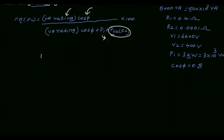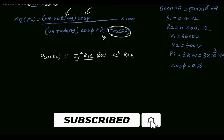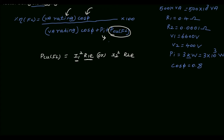First we have to find out the full load copper loss in order to find the efficiency. The full load copper loss can be found using either I1² R1E or I2² R2E, where I1 is the primary full load current and R1E is the equivalent resistance referred to the primary side, and I2 is the secondary full load current with R2E referred to the secondary side. We will use the formula I1² R1E.